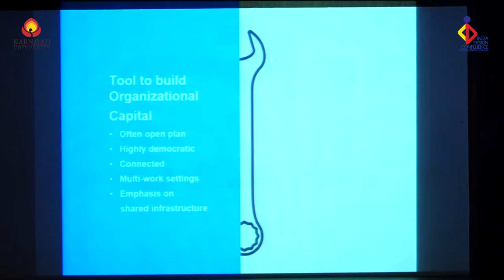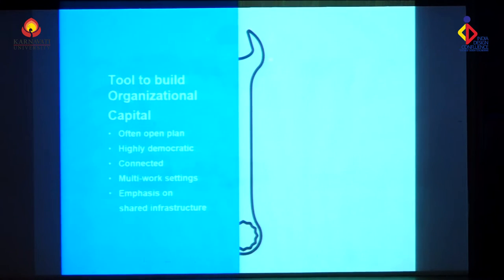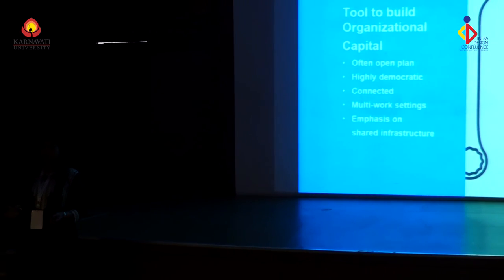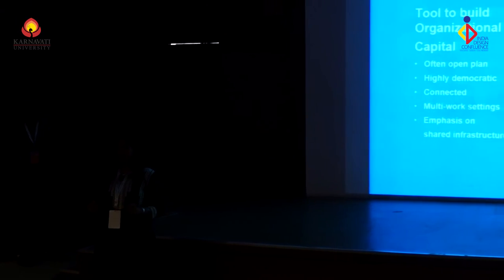The choices that CEOs make tell us more about them as people. These kinds of offices I call organizational capital offices — they are often open plan, very democratic, egalitarian: same office for everyone. They don't hesitate pulling a hundred, two hundred people out of their cabins and giving them open plan. A lot of shared infrastructure emphasis, multi work settings. For your generation, I hear this all the time — these millennials, they cannot stay in one place. They have to move throughout the day. How many people think that's true?